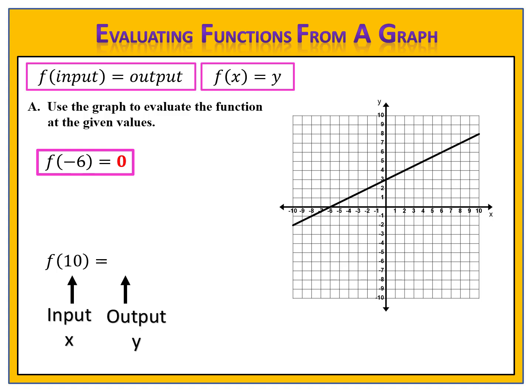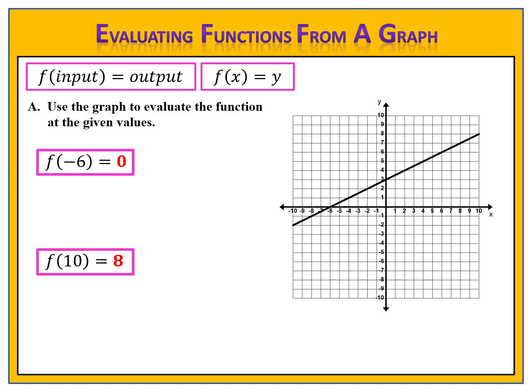Next, let's evaluate f of 10. F of input equals output — 10 is the input and we want to find the output. We go on the graph on the x-axis where the inputs are and go up to the point. The point is (10, 8), so the input 10 has the output 8. Therefore, f of 10 equals 8.